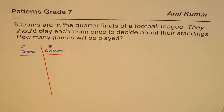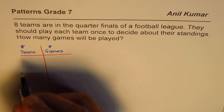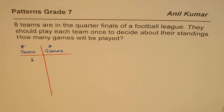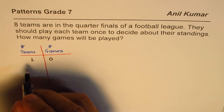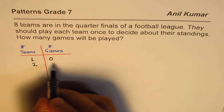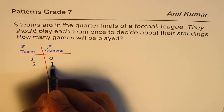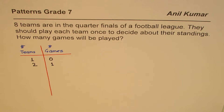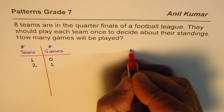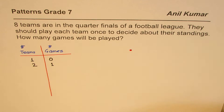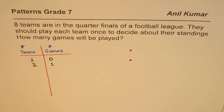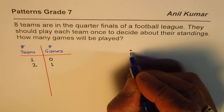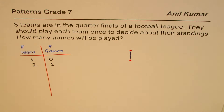If we have just one team, the number of games will be zero — one team cannot play against anyone. But if we have two teams, they could play one game. So with one team it's zero games, and with two teams there is one game between them.